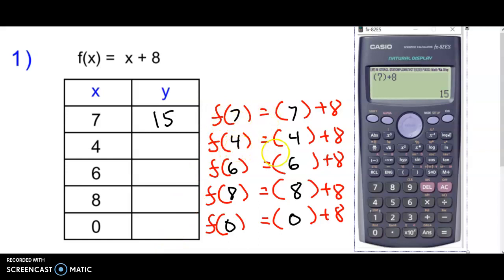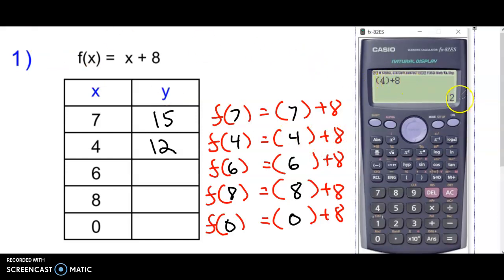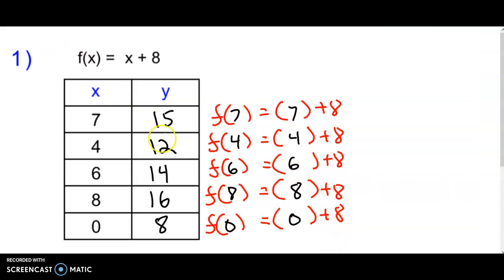f of 4 is equal to — let's find out. I take 4 plus 8 and plug that into the calculator: 4 plus 8 is equal to 12. So I write my answer as 12. It's just like we did on the previous one with y equals something, just a different notation. So f of 4 is equal to 12. You keep going — type in 6, 8, and 0 into the calculator and you get the answers: 14, 16, and 8.